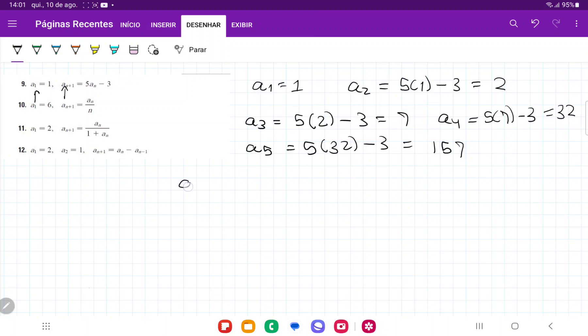So the sequence is defined by 1, 2, 7, 32, 157, and so on. And that is what we get when we expand the first five terms of the sequence through the recursive formula.